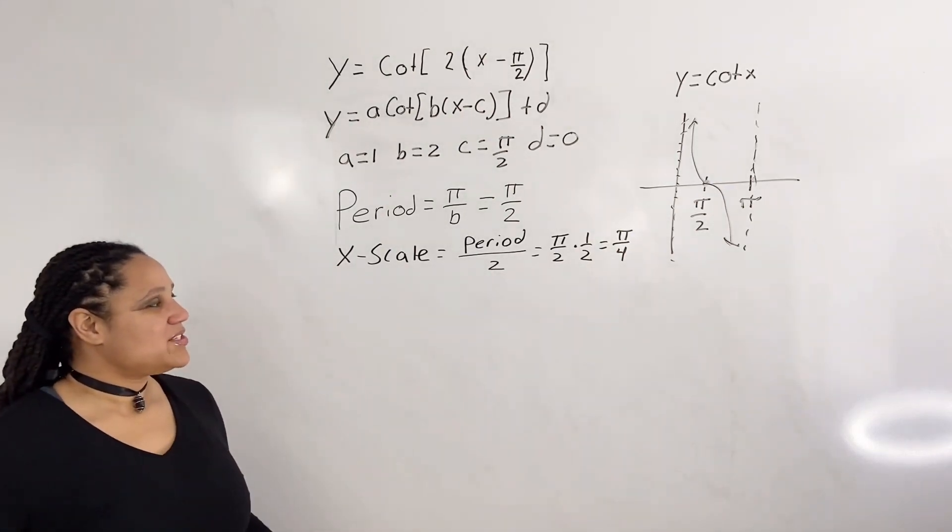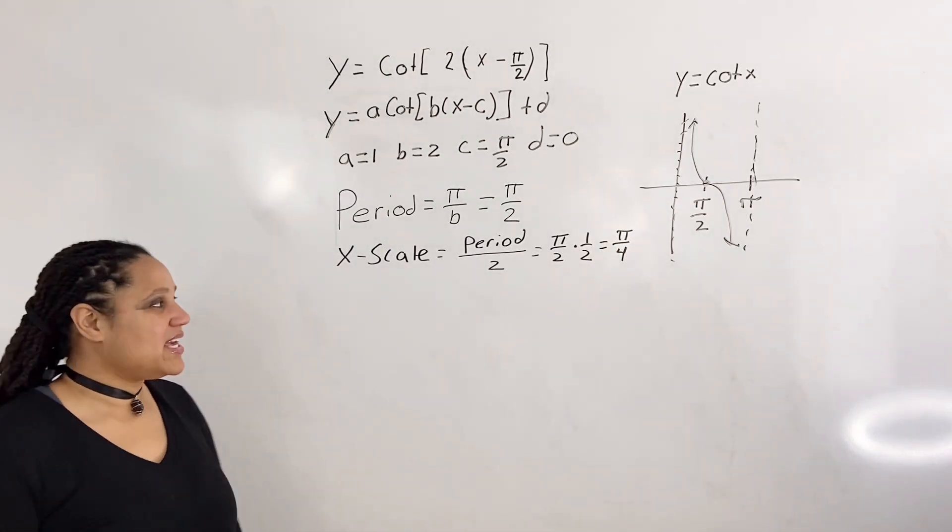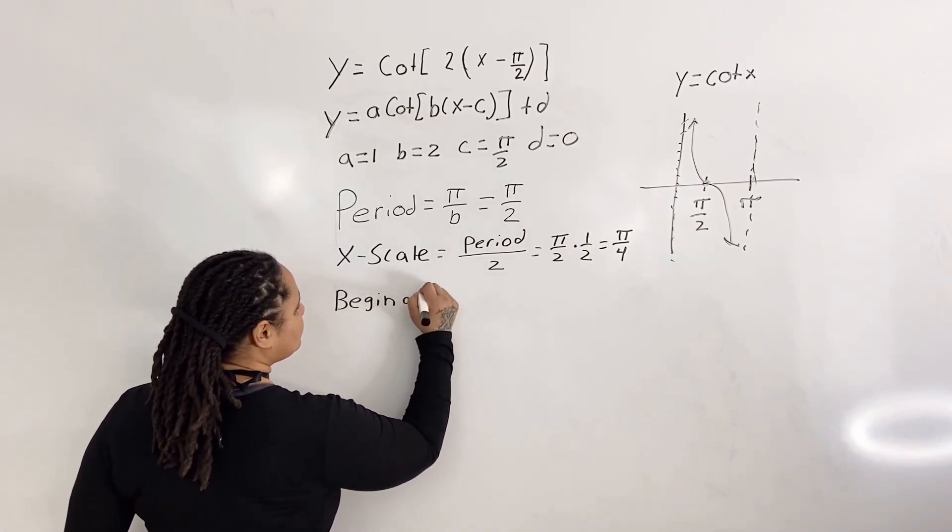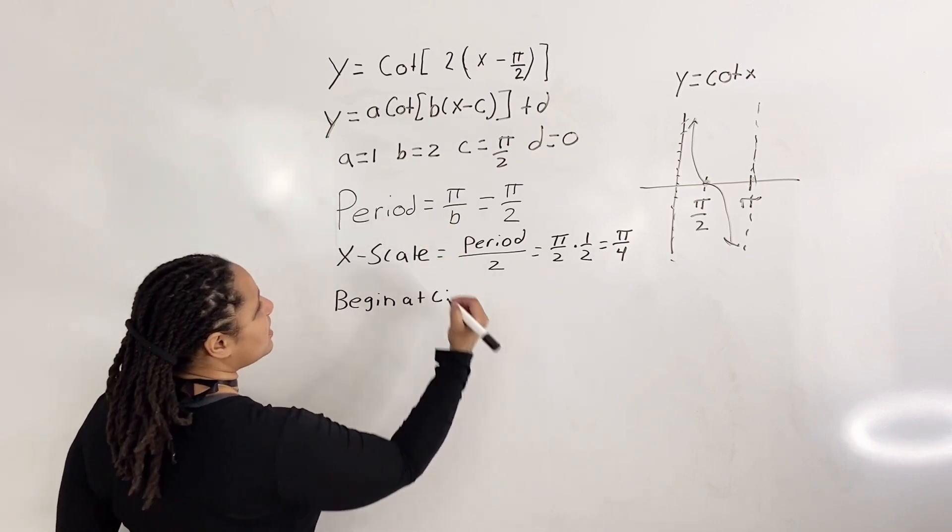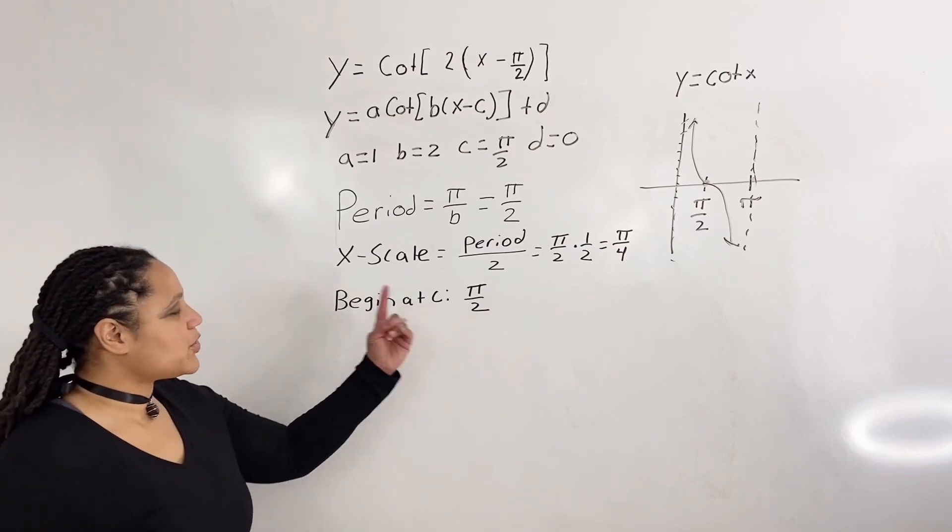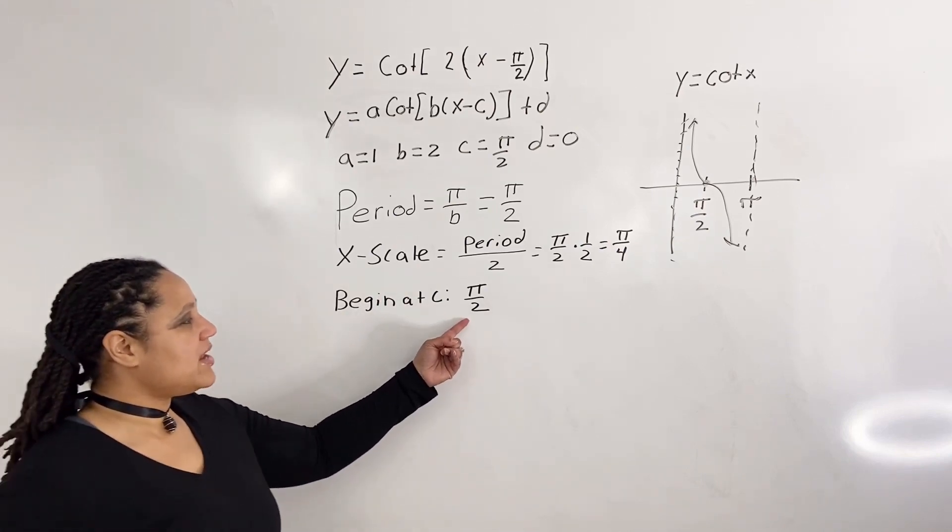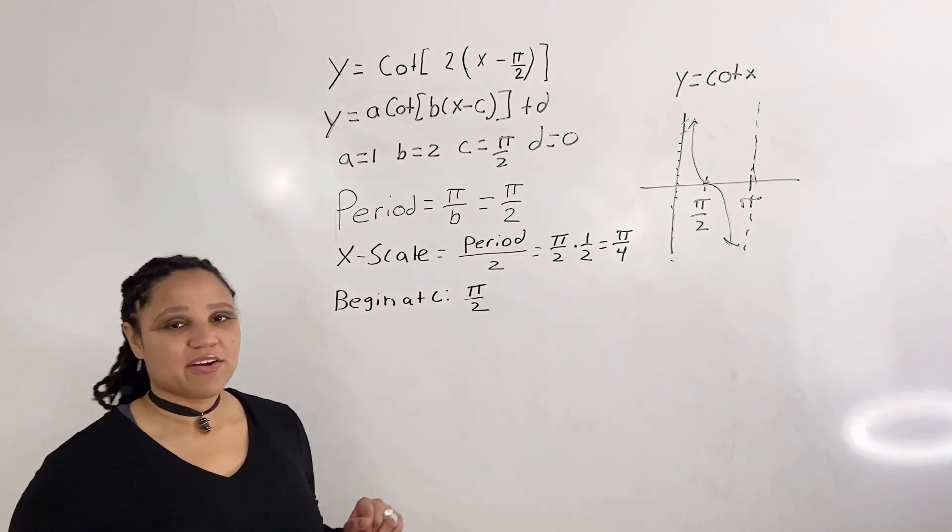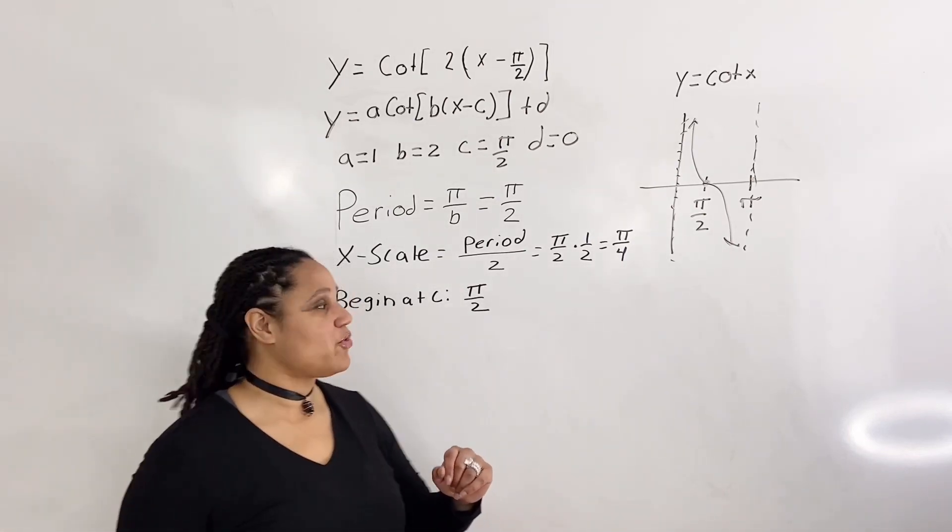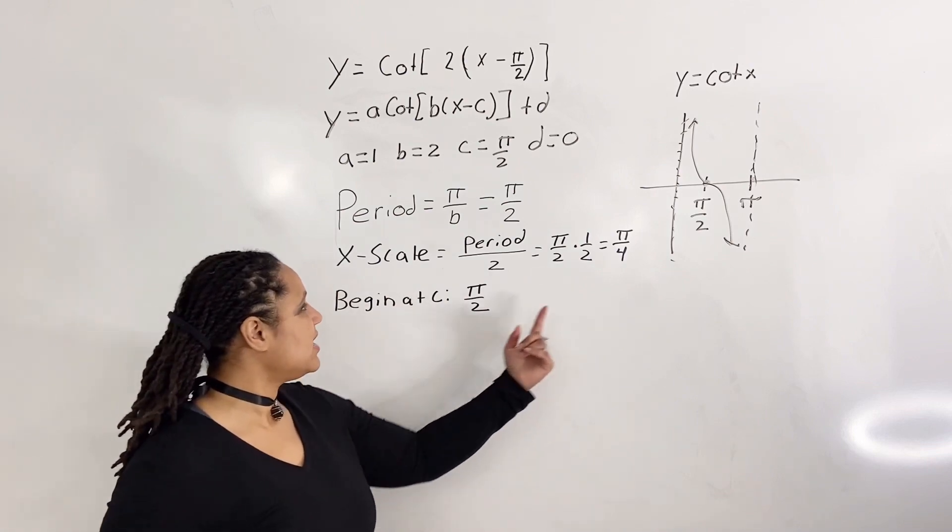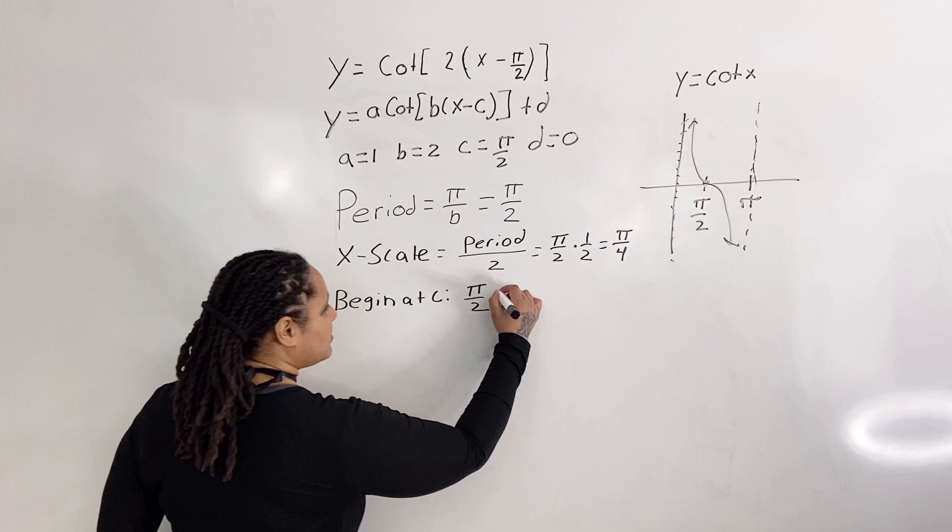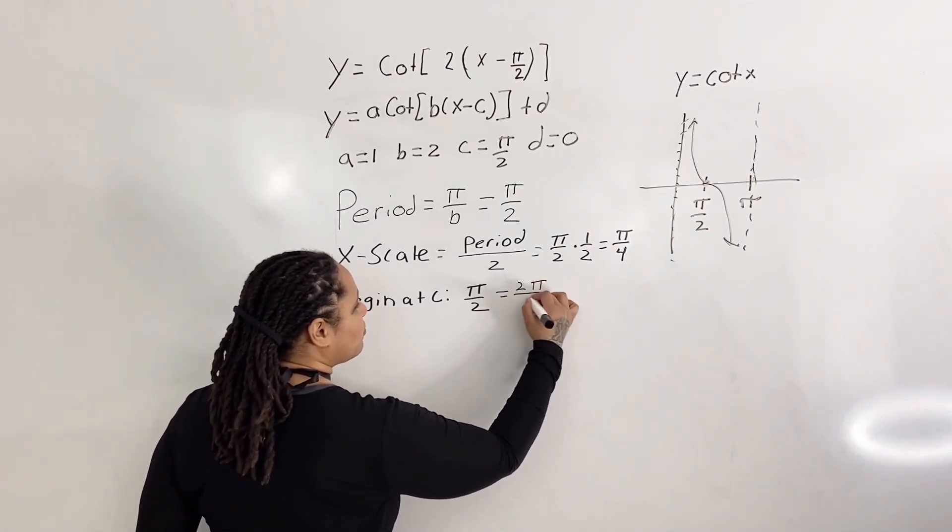So now we want to know where does our graph begin? Well, we begin at c. And what is our c? Our c is pi over 2. And so what we're going to do is we're going to begin at c, and then we're going to model our parent graph, and we're going to add increments of pi over 4. So since we're adding c and our x-scale together, how about I give it a common denominator? So pi over 2 is the same as 2 pi over 4.